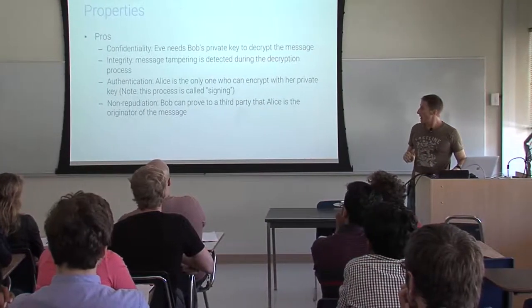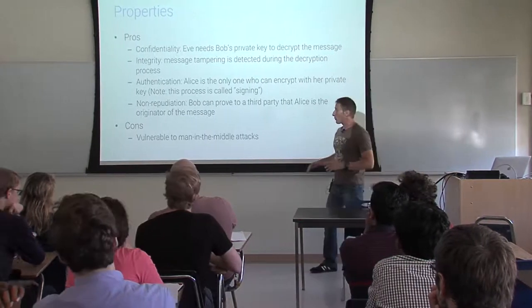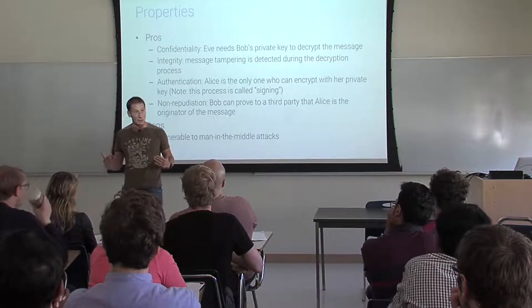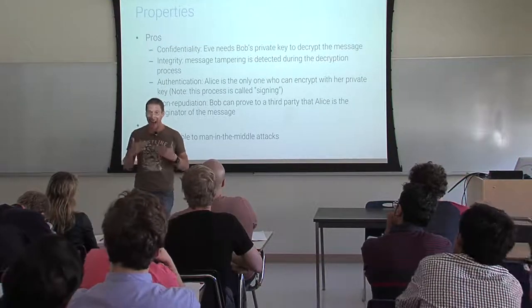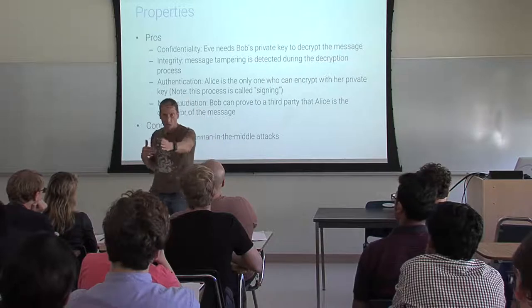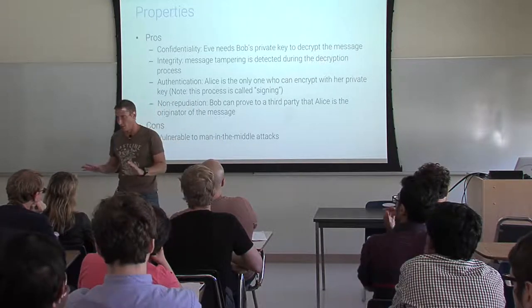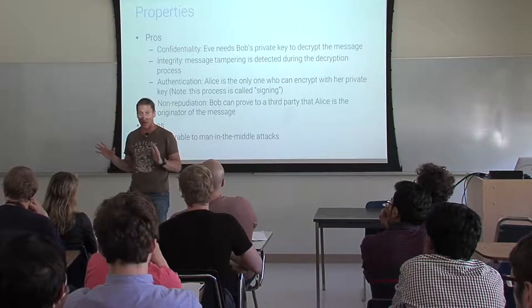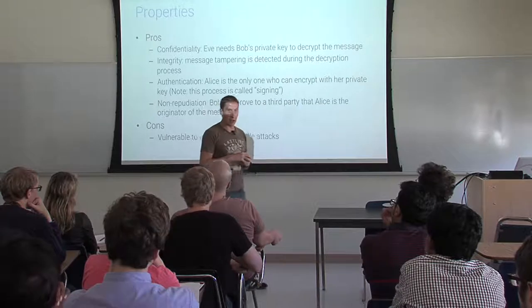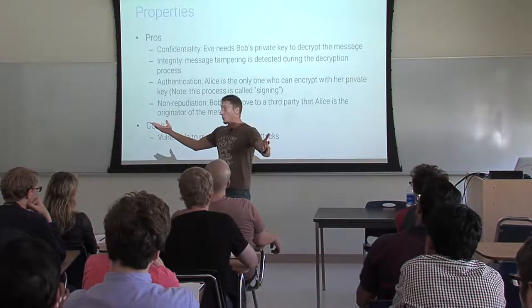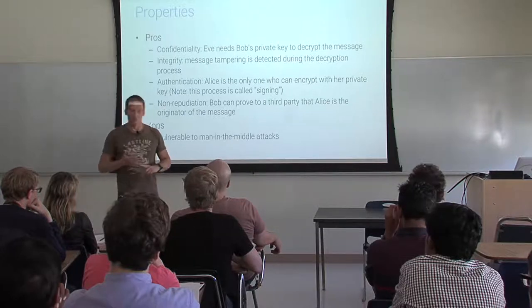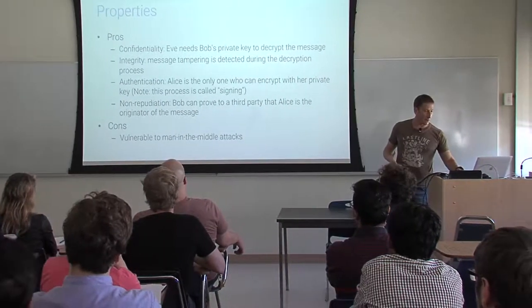This is all great, but unfortunately this approach is vulnerable to man-in-the-middle attacks. Before, with the KDC or symmetric approach, we had out-of-band establishment of secrets. Now I'm giving my public key to everybody, so Eve can observe, intercept, and modify that communication. In a man-in-the-middle attack, Eve acts as a proxy between Bob and Alice. When Alice sends her public key to Bob, Eve intercepts it, stops it from reaching Bob, and sends Eve's own public key to Bob, pretending it's Alice's.